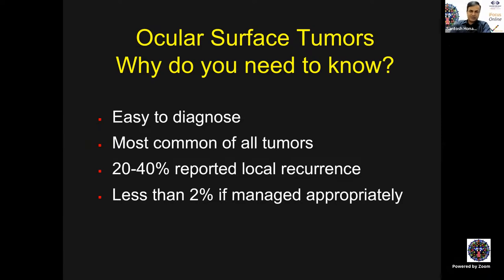Why do we need to learn Ocular Surface Tumors? Because they are staring at your face, begging for a diagnosis. They are the most common of all tumors in and around the eye. If not managed appropriately, 20 to 40 percent can have local tumor recurrence with regional lymph node and systemic metastasis. But with appropriate diagnosis and management, local recurrence can be brought down to less than 2 percent.